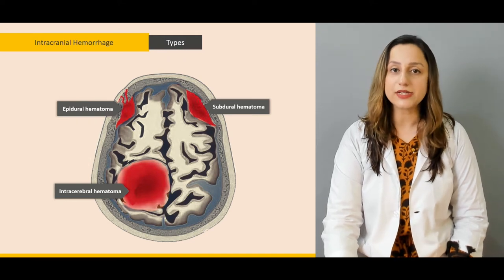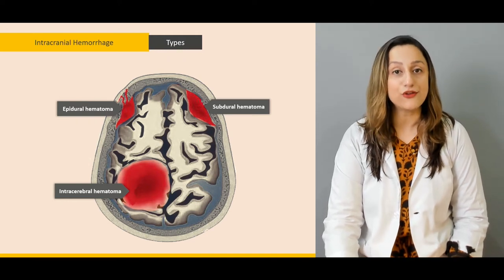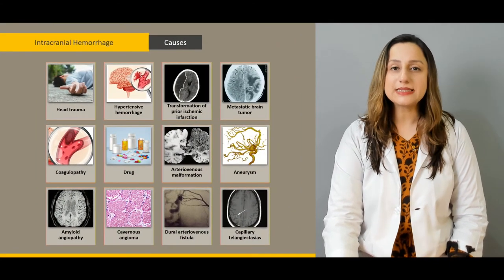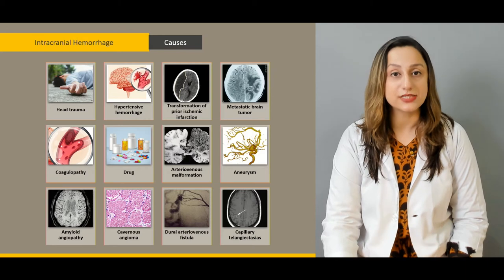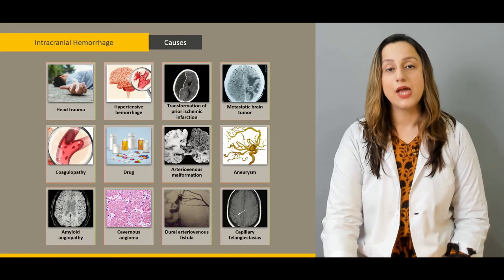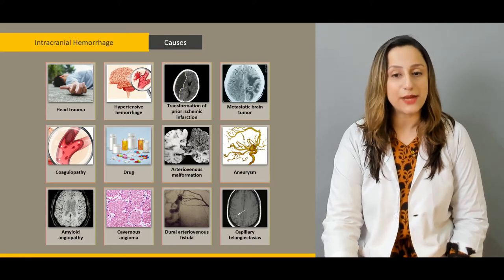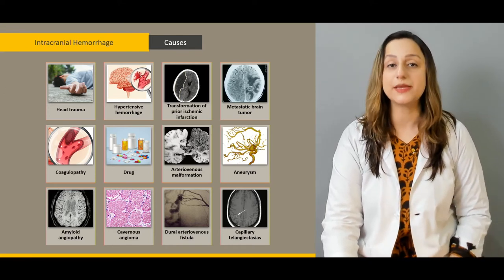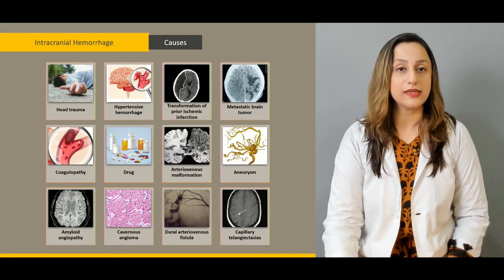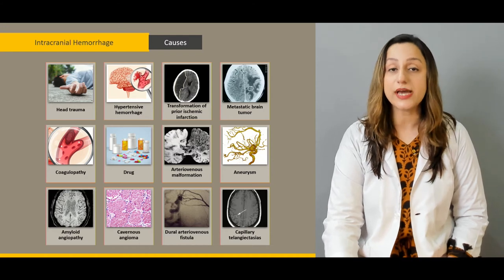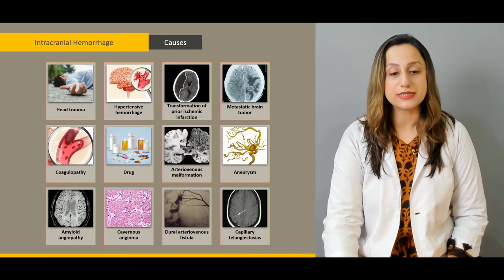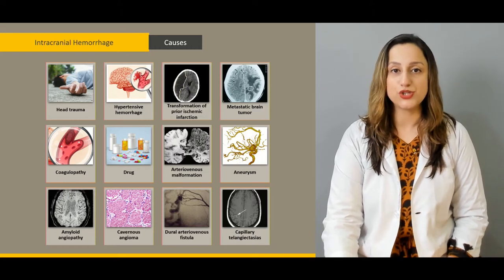We'll consider the different etiological factors that contribute towards the development of such conditions, mainly head trauma, hypertensive hemorrhages, transformation of ischemic infarctions, metastatic brain tumors, coagulopathies, and congenital conditions such as malformations, aneurysms, and amyloid angiopathies, which place a person at risk for intracranial hemorrhages.